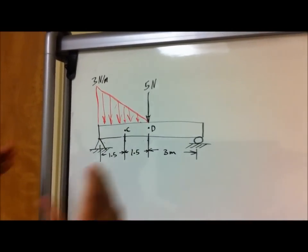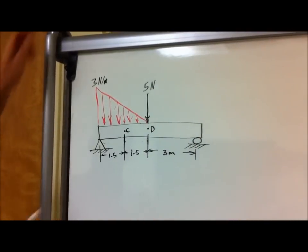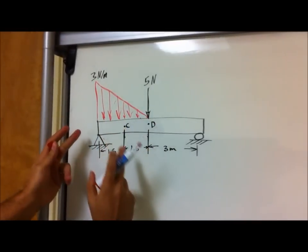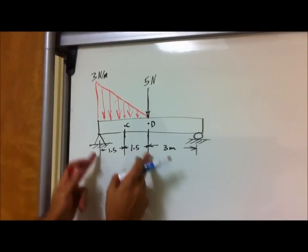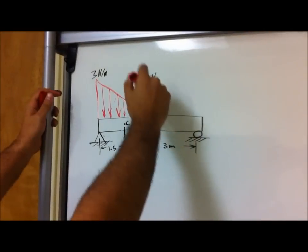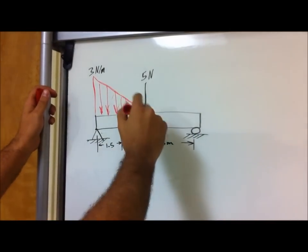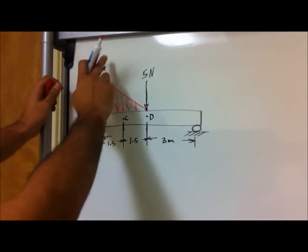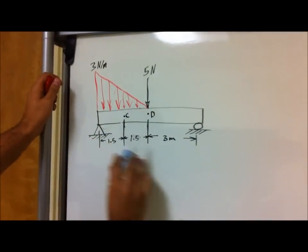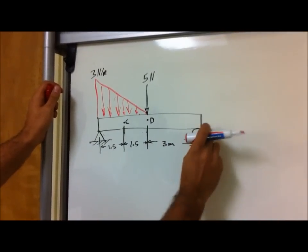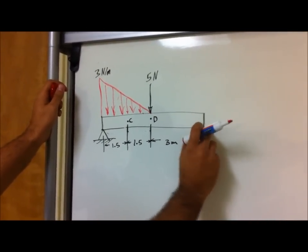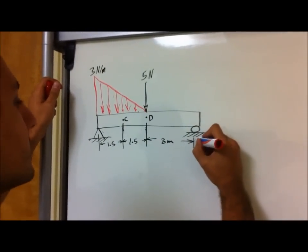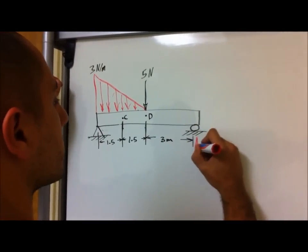When you look at a problem like this, we have a distributed force at this section, which is from about zero up to three meters, and we also have an external force acting downward of five Newtons. The distributed force is three Newtons per meter. This is a roller connection — correction, sorry about that — and then we have a pin connection. A roller connection tells us there is a vertical reaction force.